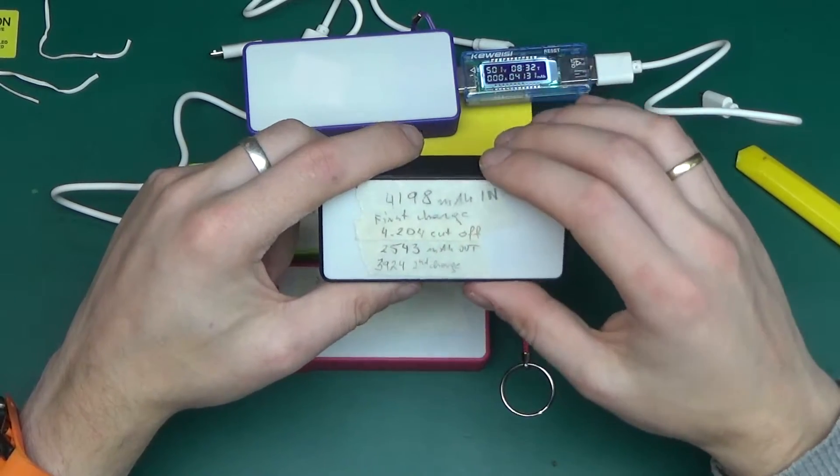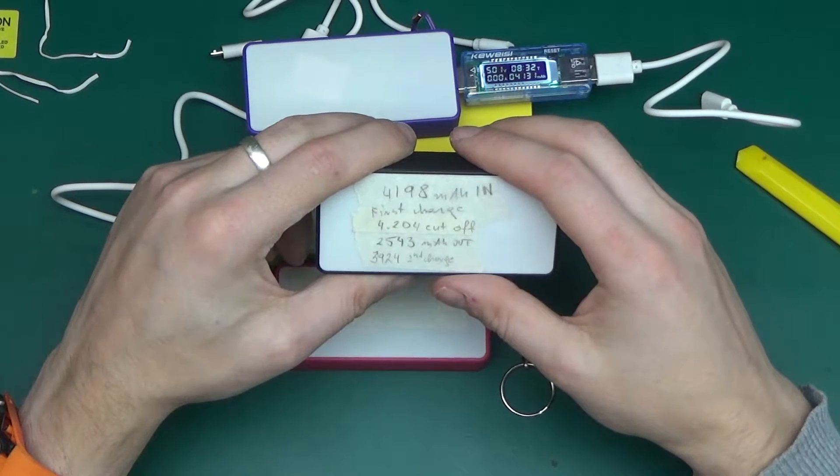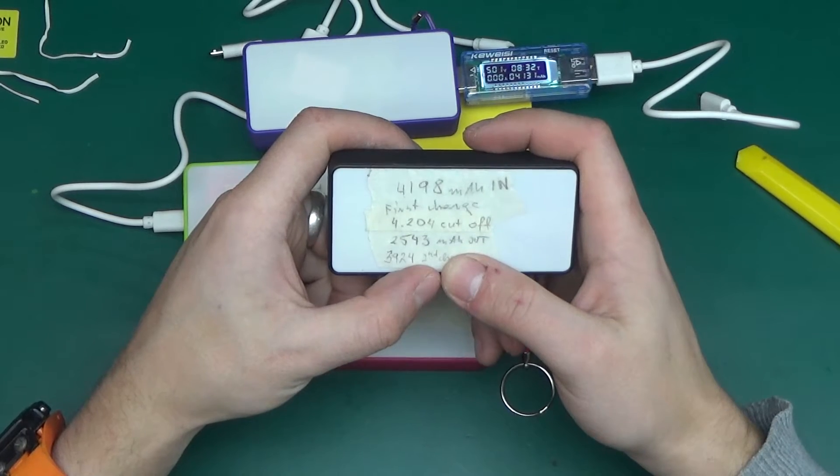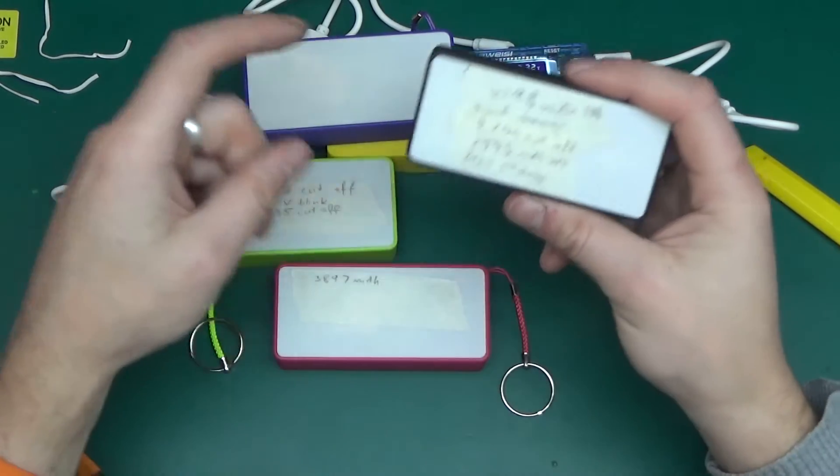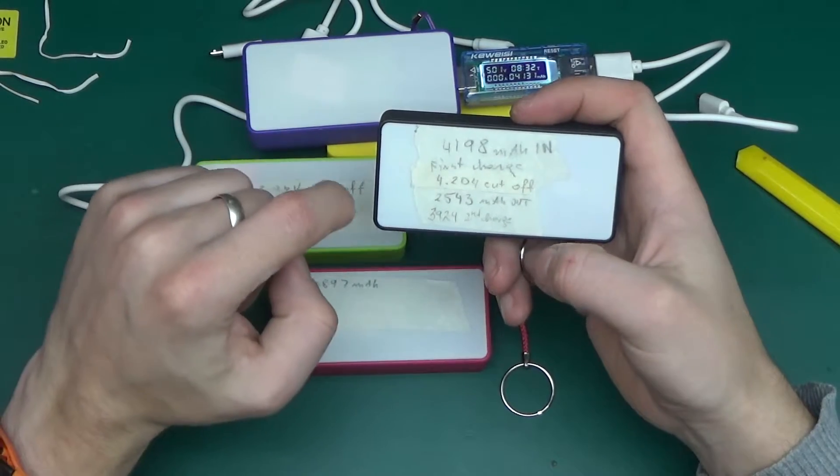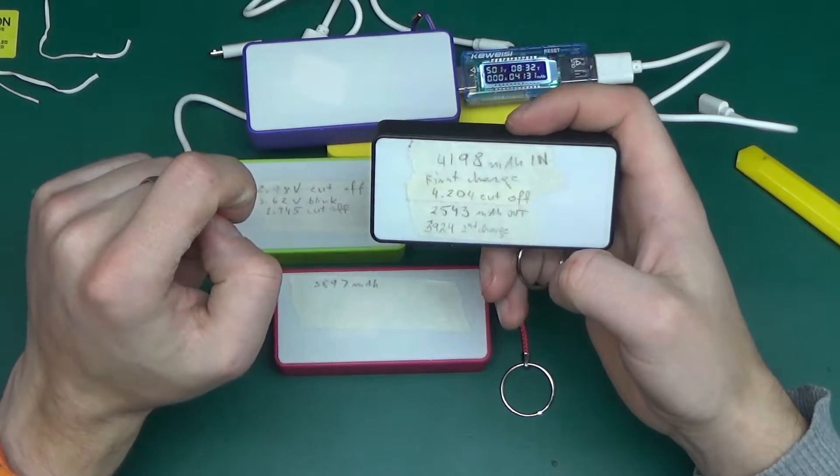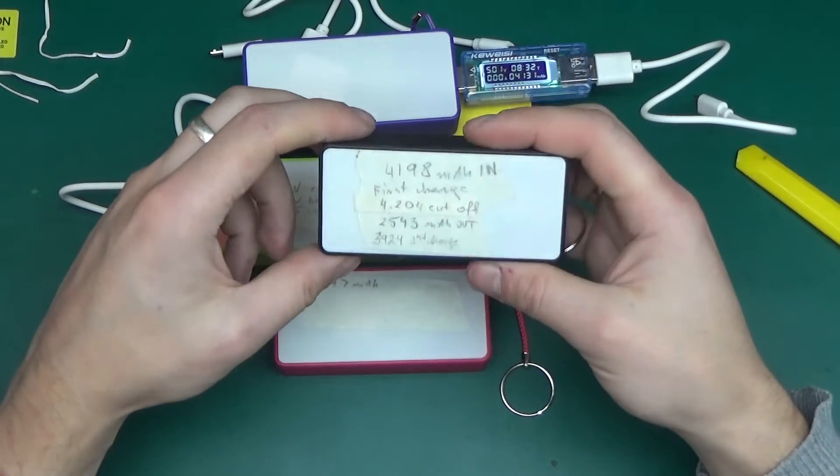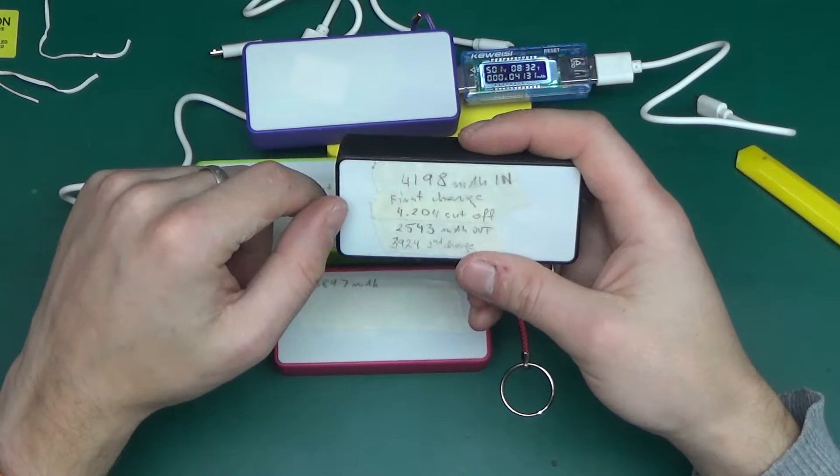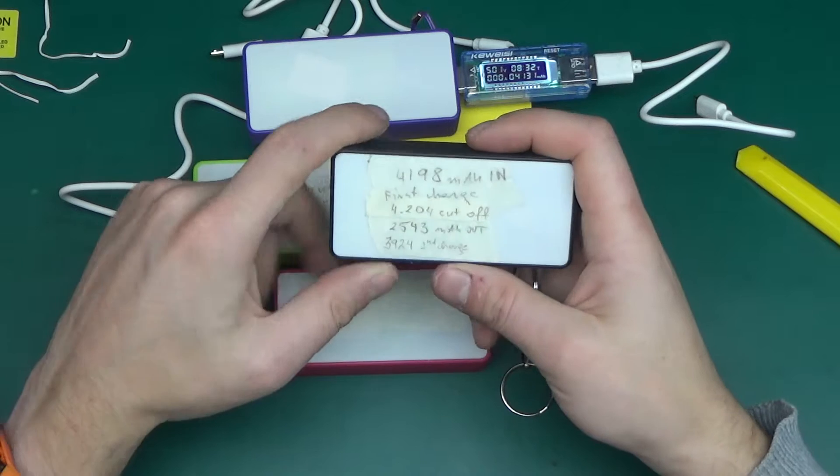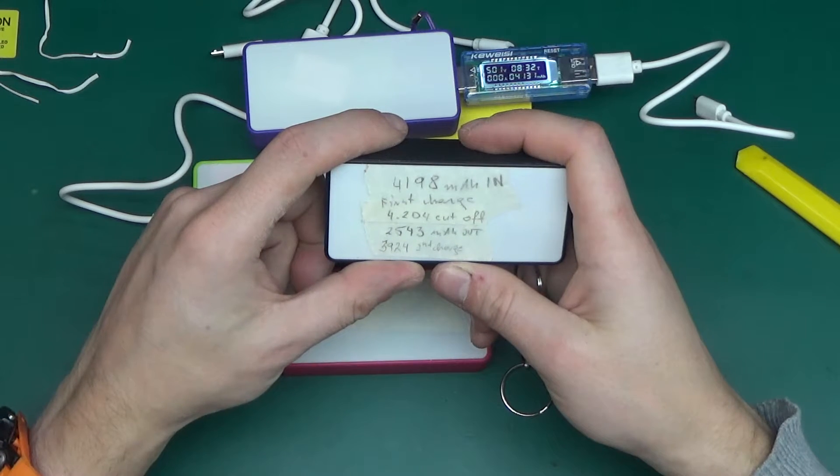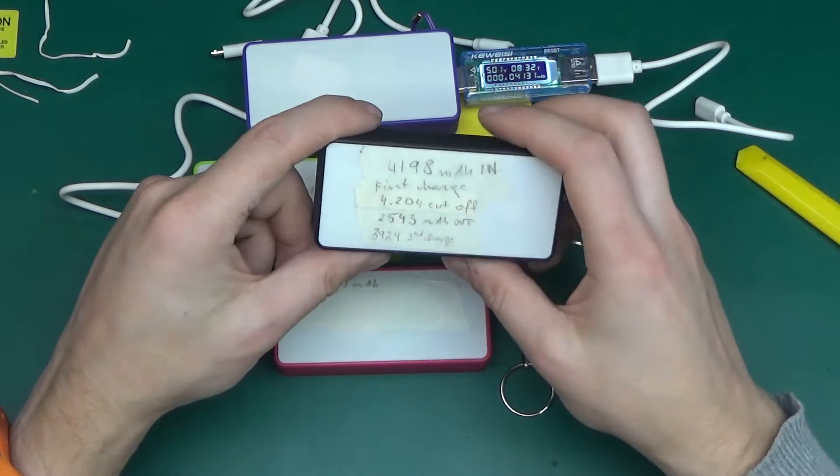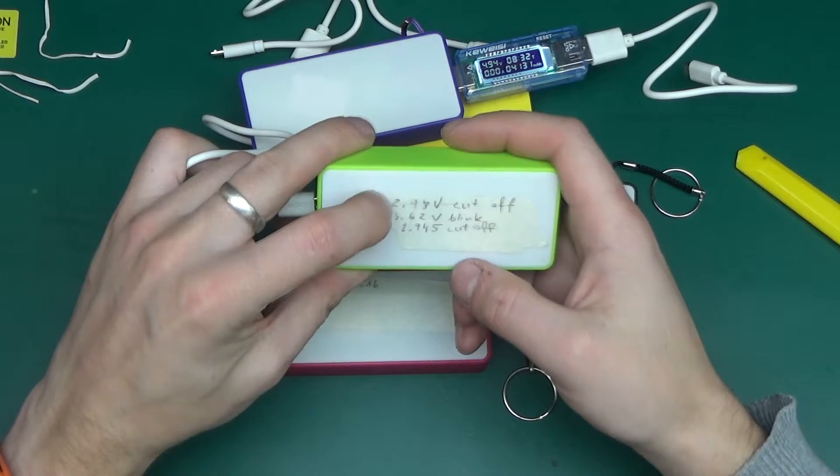Then, when I used this power bank as a source, fully charged, and start charging something else out, I was able to get only 2543 milliamps out, at which point it stopped charging. It cuts off at 2.945 volts on the battery terminals, just under 3 volts. I don't think you can do much more to lithium-ion batteries without damaging them. Again, the protection chip inside did work. I gave it a second charge, and it took 3924 milliamps on the second charge, so more or less about 4 amp hours in, and about 2.5 amp hours out. Cut off was 2.98 volts.